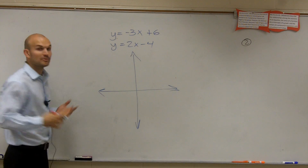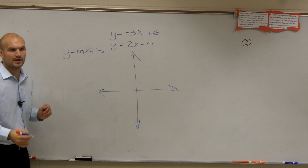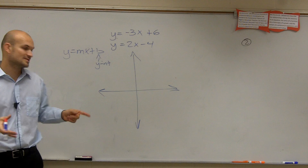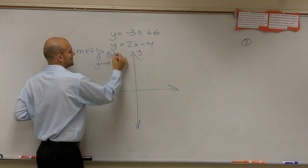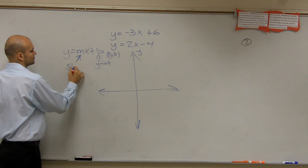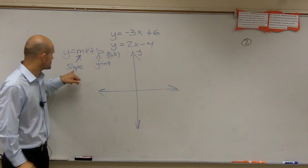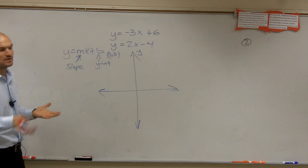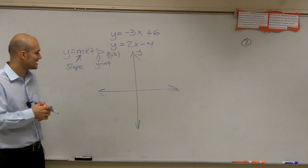First of all, we need to remember what slope-intercept form is: y equals mx plus b. Where b is your y-intercept — that's where the graph crosses the y-axis, and it crosses at the point (0, b). And m is your slope — that's your inclination of your line, the rate of change of your y values over your x values. Sometimes we say it's rise over run, but it's really the ratio between the change in y values and x values.